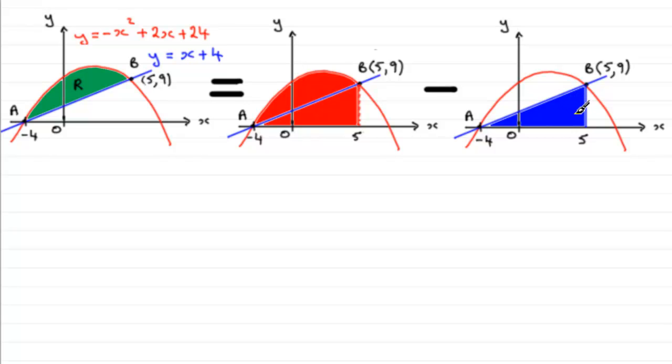Okay, welcome back if you had a go. Let's just see how you tackled this. Well, to get the area R, let's just put it down here, area R, it's going to equal the area under this curve between minus 4 and 5.